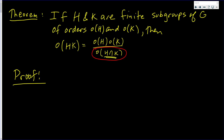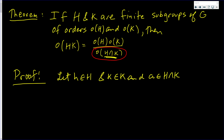Now we know that since H and K are subgroups, their intersection is a subgroup of G, so it has at least one element, e. Let h be in H, k be in K, and a be in the intersection H∩K.